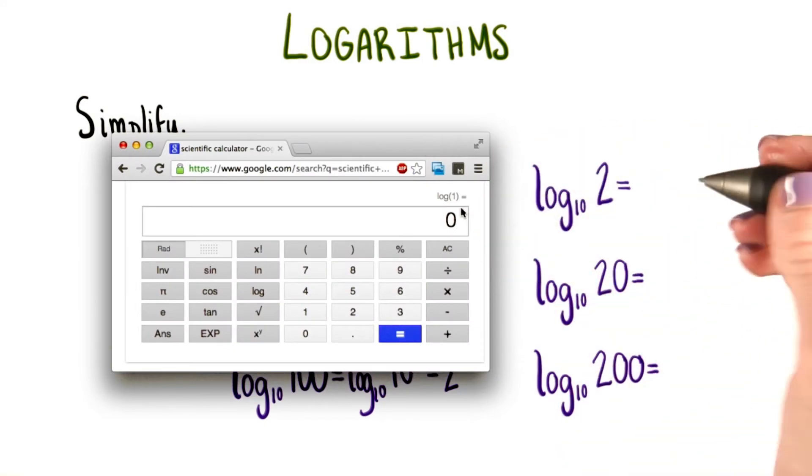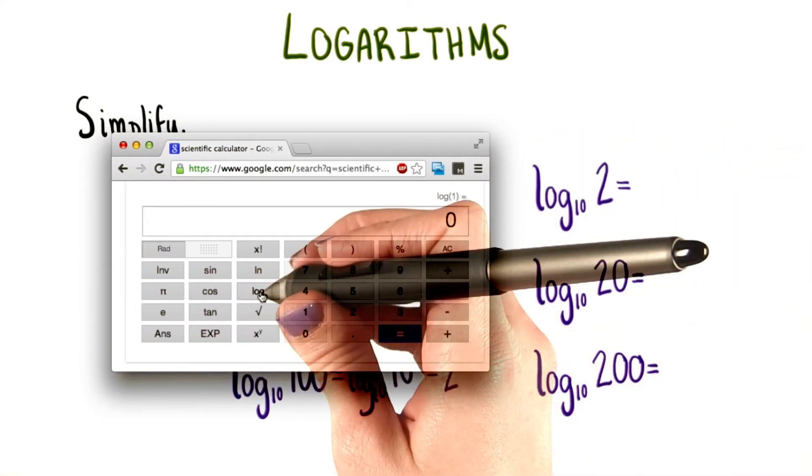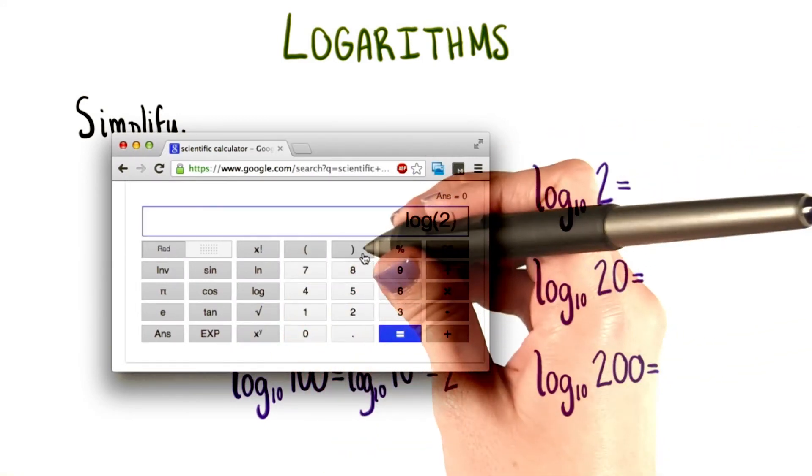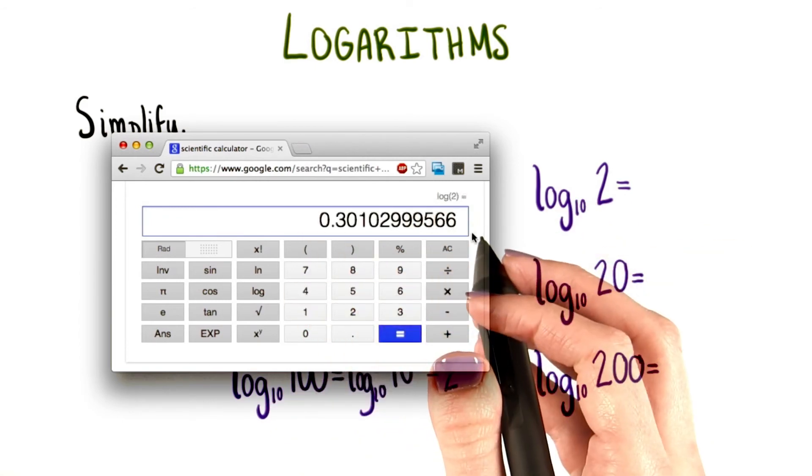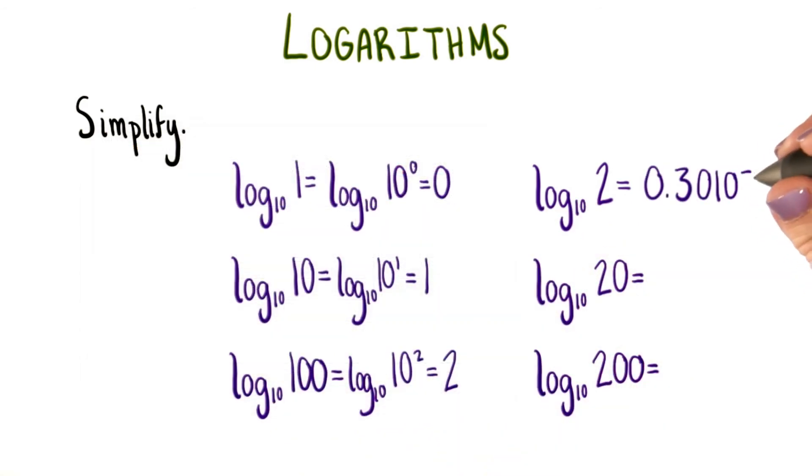Let's try one of them out. How about the first one? So log base 10 of 2 equals this long decimal. I'm going to round to the 5th decimal place. Entering the last two problems on the calculator gives me long decimals as well.